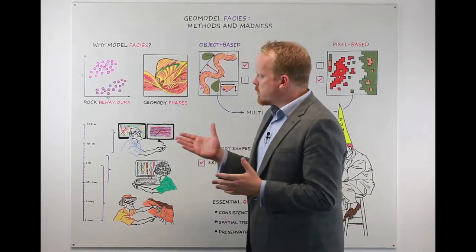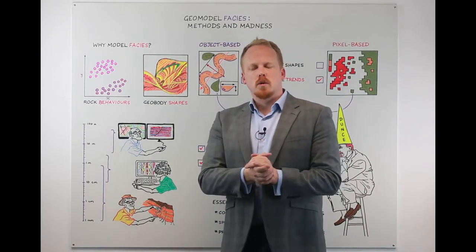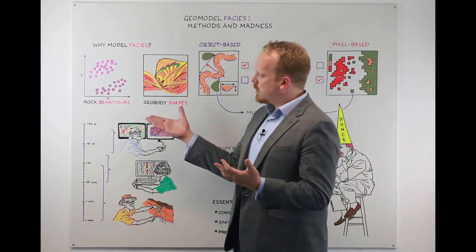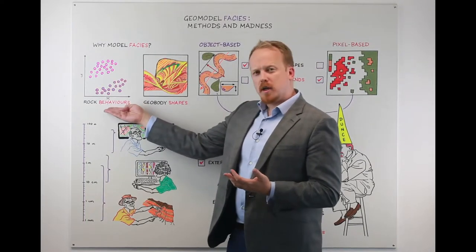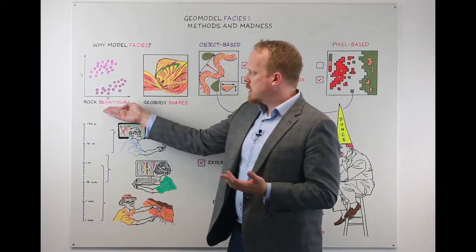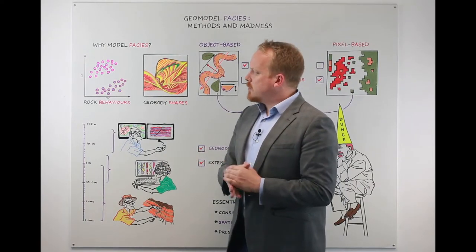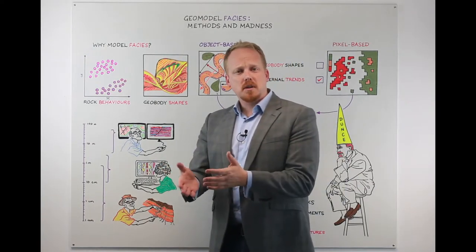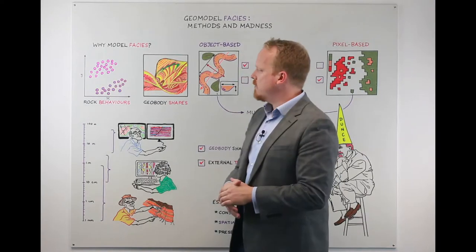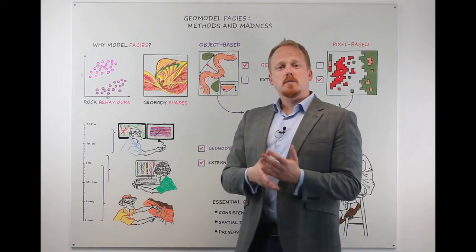So when we do facies modelling, we're normally trying to achieve one or two of these kinds of effects. We're trying to represent particular rock flow behaviours, so there might be correlative relationships between things like porosity and permeability or relative permeability differences that might be on a bin-like behaviour, or we're trying to represent geobody shapes.